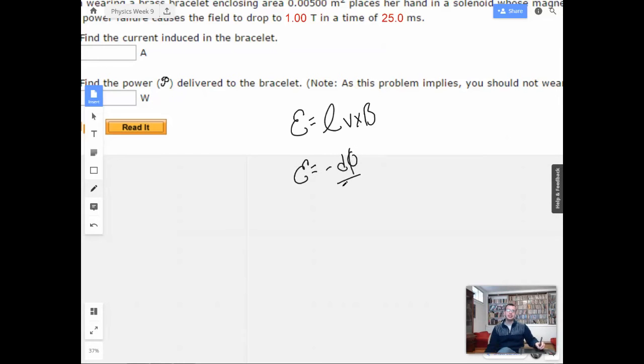Negative d flux dt, which equals negative db dt times area plus change in area with respect to time times magnetic field. And so we know that the bracelet, the area of the bracelet doesn't change. That's going to be zero.